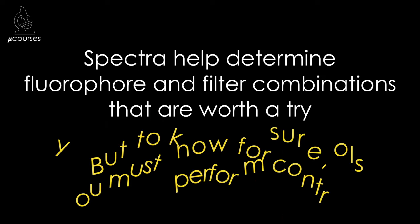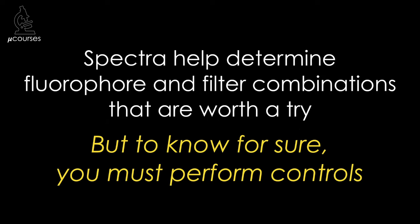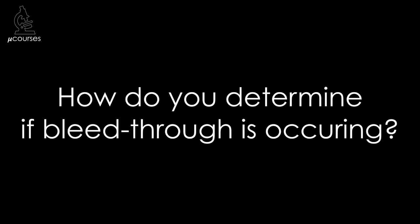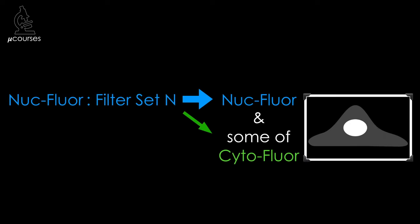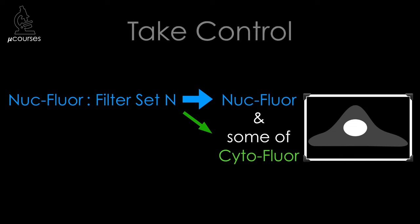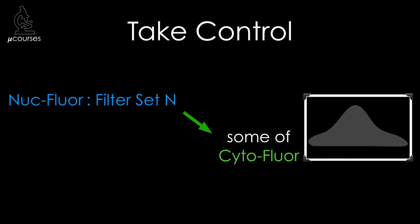But the only way to be sure bleed-through is not present in your images is to control for it. Controlling for bleed-through is absolutely required for all co-localization experiments. When we image nukeflor with filter set N, we detect both nukeflor and bleed-through from cytoflor. The control specimen that would reveal bleed-through is one that does not contain nukeflor — any signal seen in that sample with filter set N is coming from something other than nukeflor. We call these single-labeled controls.